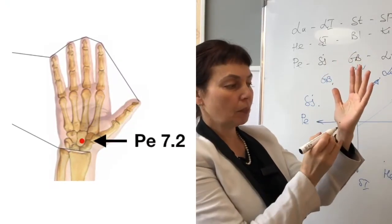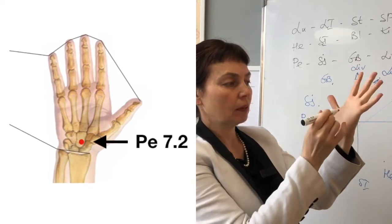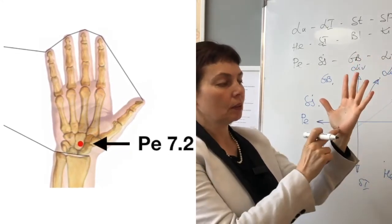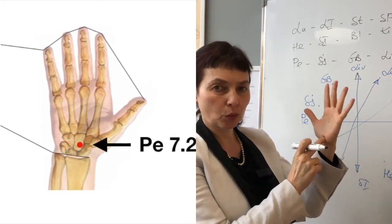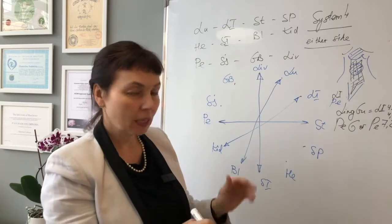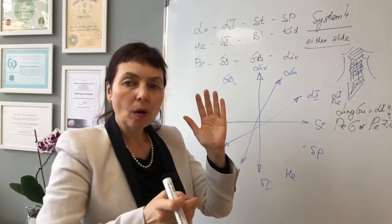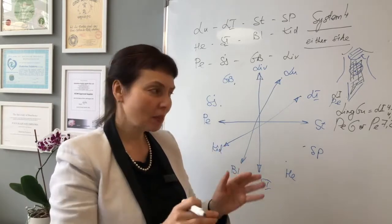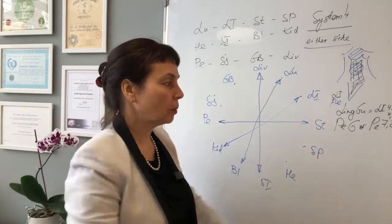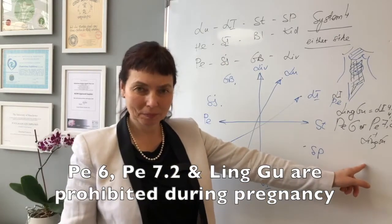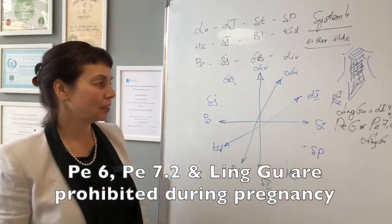If this is pericardium 7 and this is pericardium 8, pericardium 7.2 will be slightly towards pericardium 8. It takes away all menstrual pains whatsoever. The best point, combined with Lingo, but not for pregnant women. It's a very powerful combination.